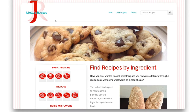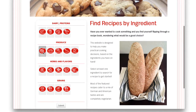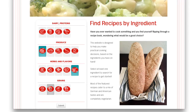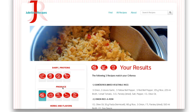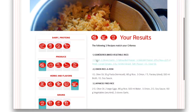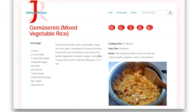The goal for Juliet's Recipes was to make a recipe site that would make cooking decisions easier. Instead of searching for a specific recipe, the user can choose which ingredients he or she has on hand and would like to use up, then is presented with a list of recipes that contain these ingredients, minimizing waste and ensuring proper food rotation.